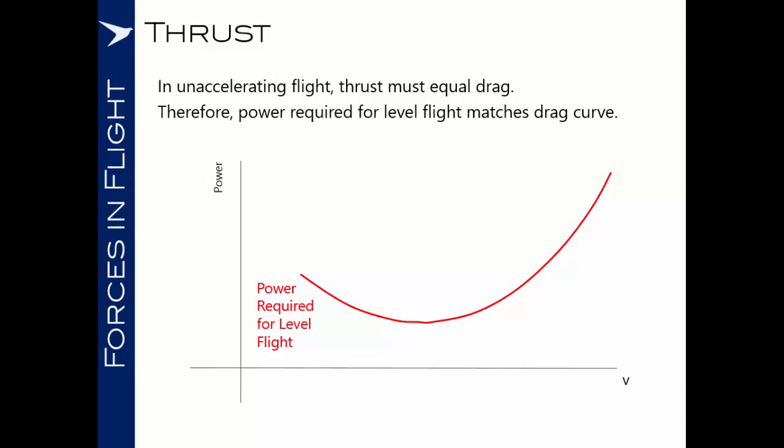When the drag is at its minimum — the minimum drag speed — we will also find that the power required to maintain that speed is at its lowest. As we accelerate faster than the minimum drag speed, we saw an increase in the zero-lift drag, and therefore we will require more thrust in order to sustain that airspeed.